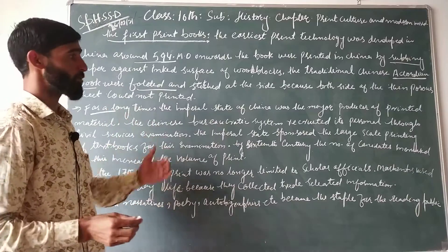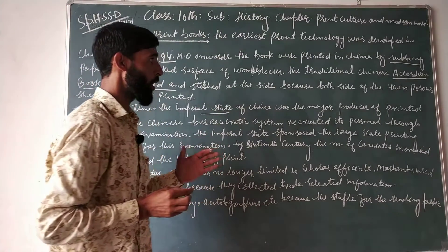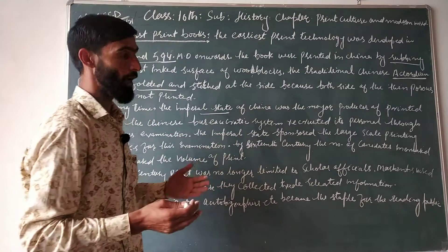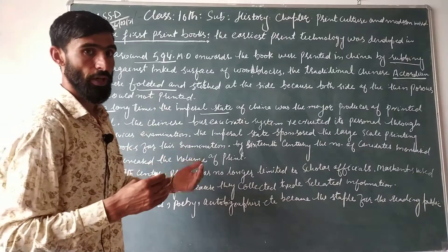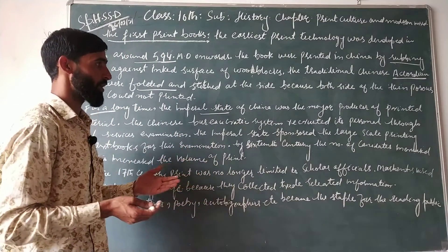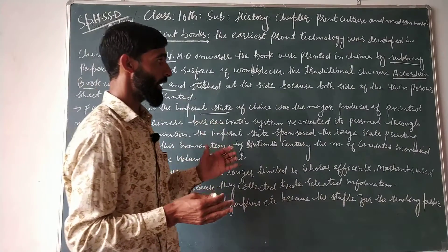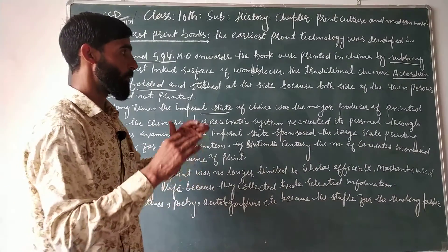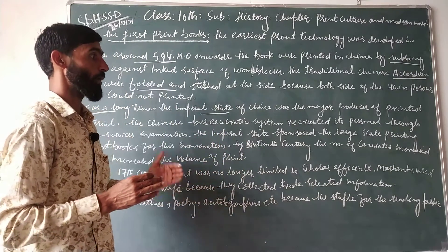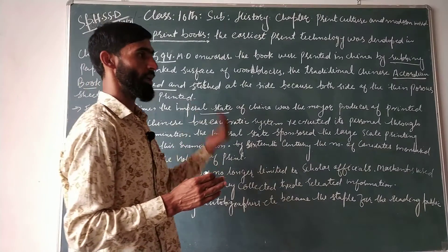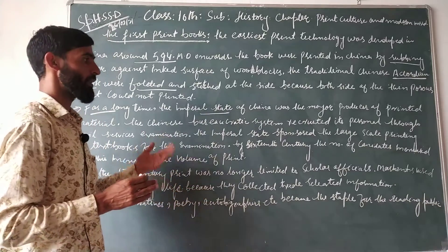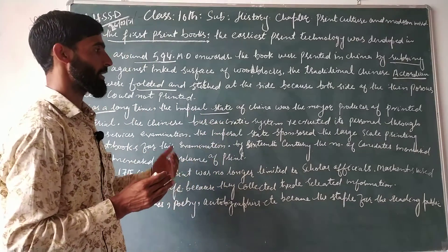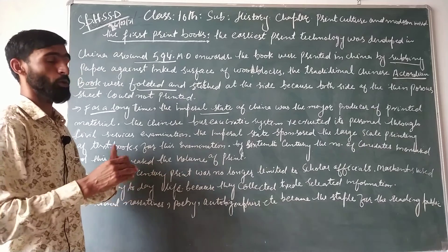The printing system was first started by the imperial state of China. The main reason was their bureaucratic system — they wanted the personnel of the imperial state to be well-intelligent and wise. So they started preparing books for examination purposes and began conducting what they called the Civil Service Examination, through which they selected well-qualified candidates so that the administration could run smoothly.